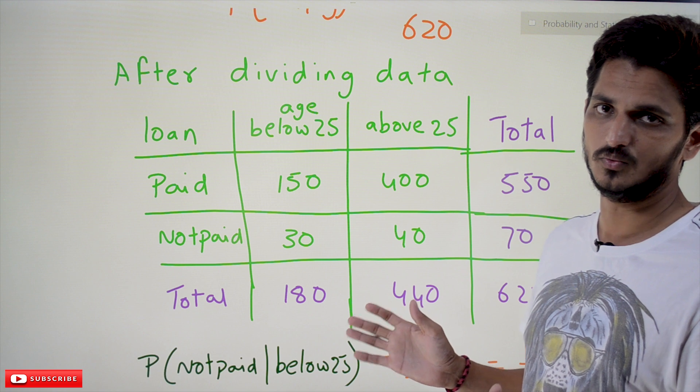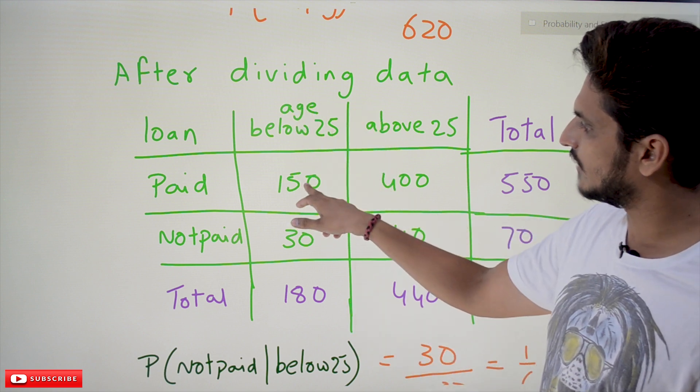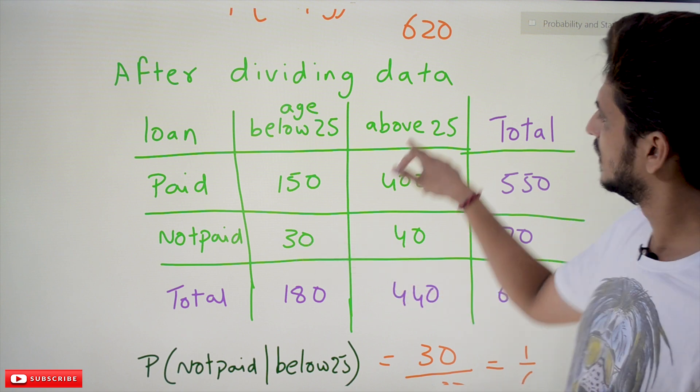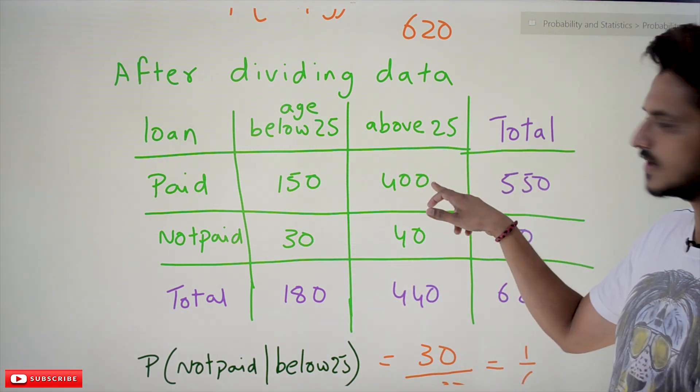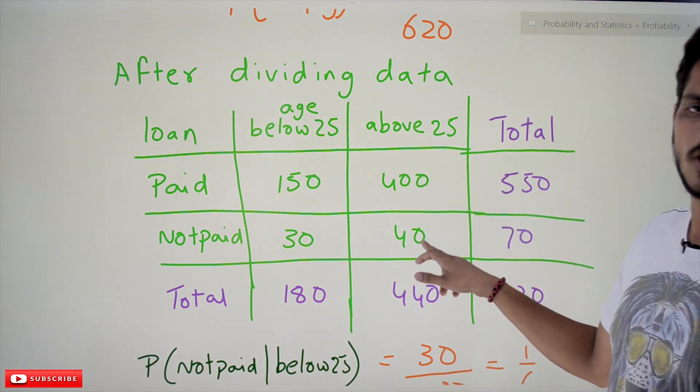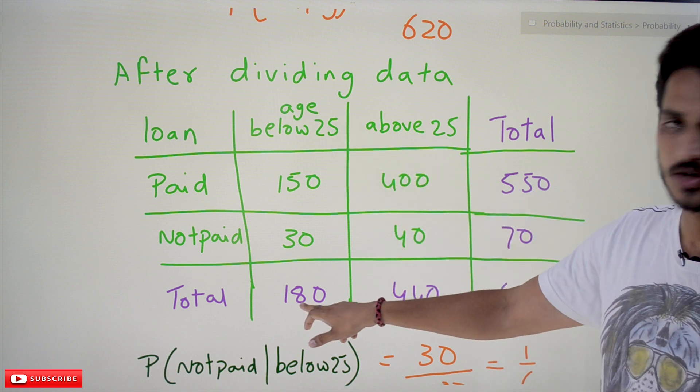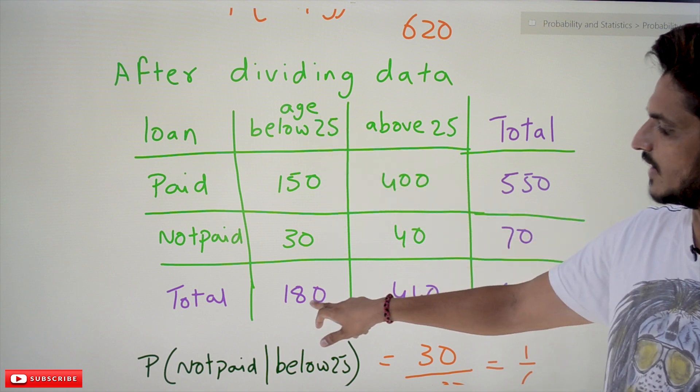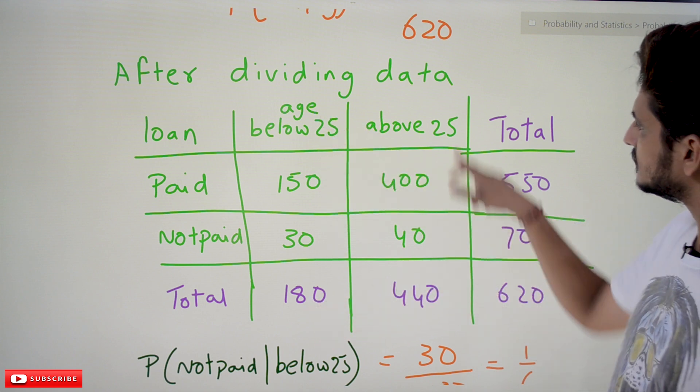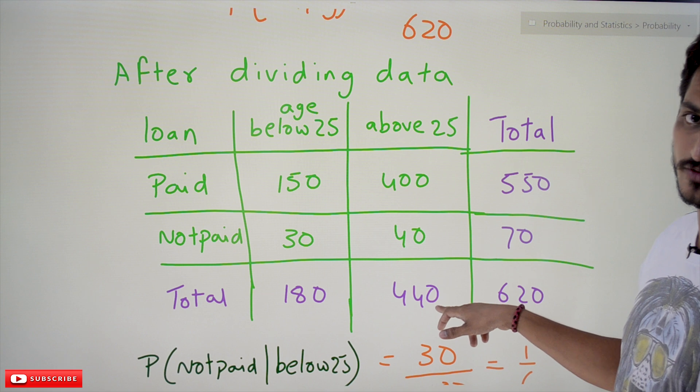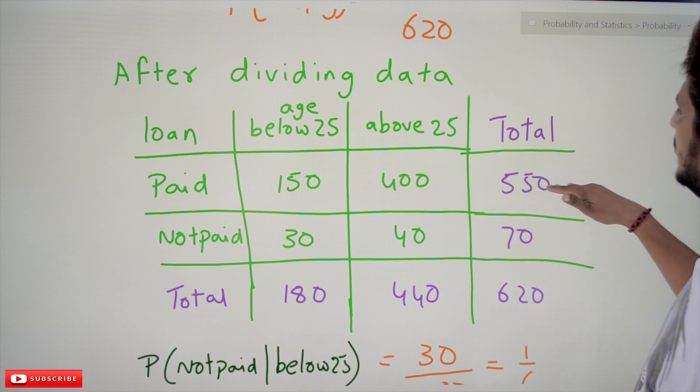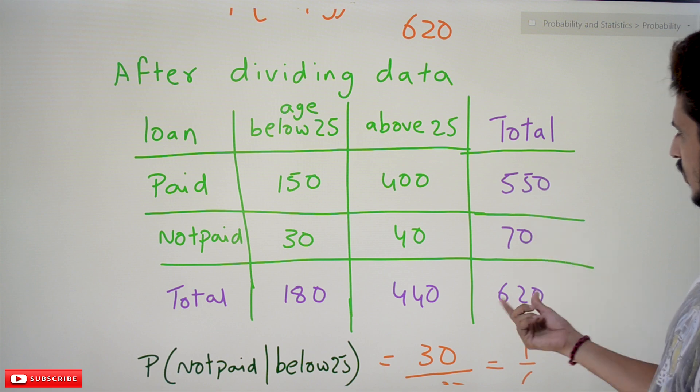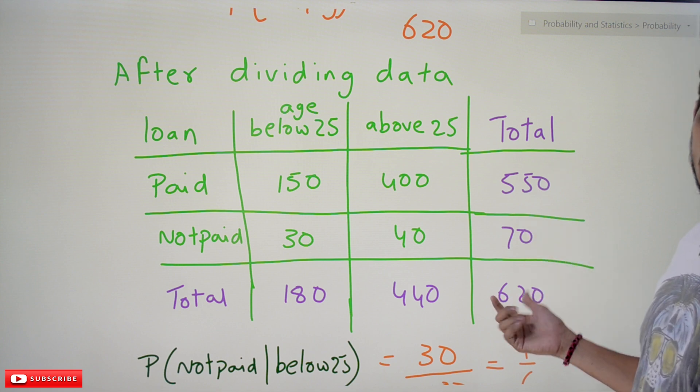Below 25, we are having 150 paid loans, 30 not paid loans. Above 25, we are having 400 paid loans, 40 not paid loans. For understanding purpose, we have mentioned the total values: total 180 below 25, we are having 180 loans; above 25, we are having 440 loans. Similarly, we are finding the total also: paid loans are 550, not paid loans are 70, total we are having 620. This is the division we have done.